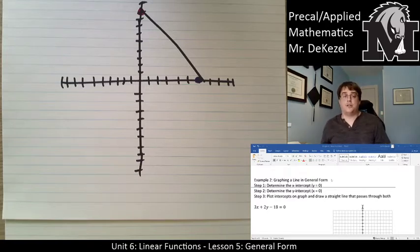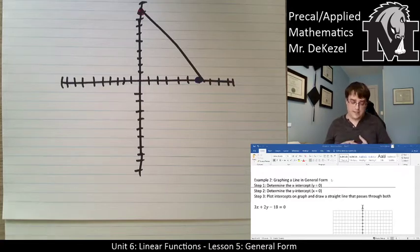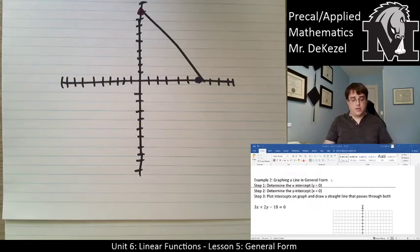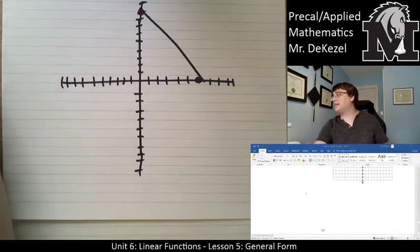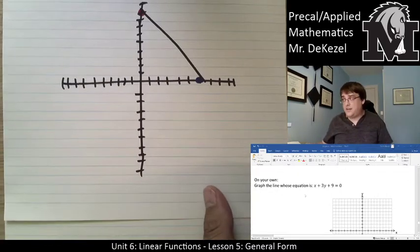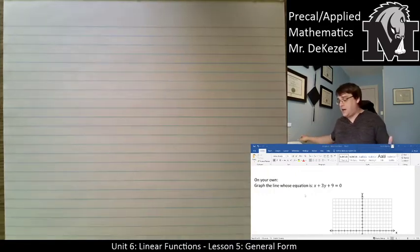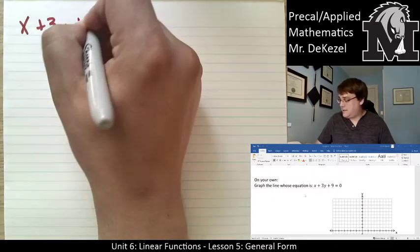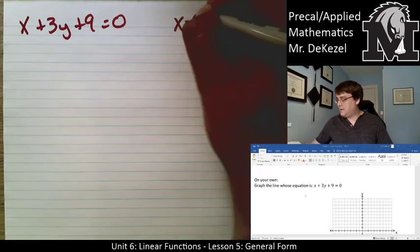Whenever we do general form to a graph, we find the intercepts by setting x = 0 and then y = 0 to get two points, then connect them. Now try it on your own: find the intercepts of the line, plot them on the graph, and then come back to check.